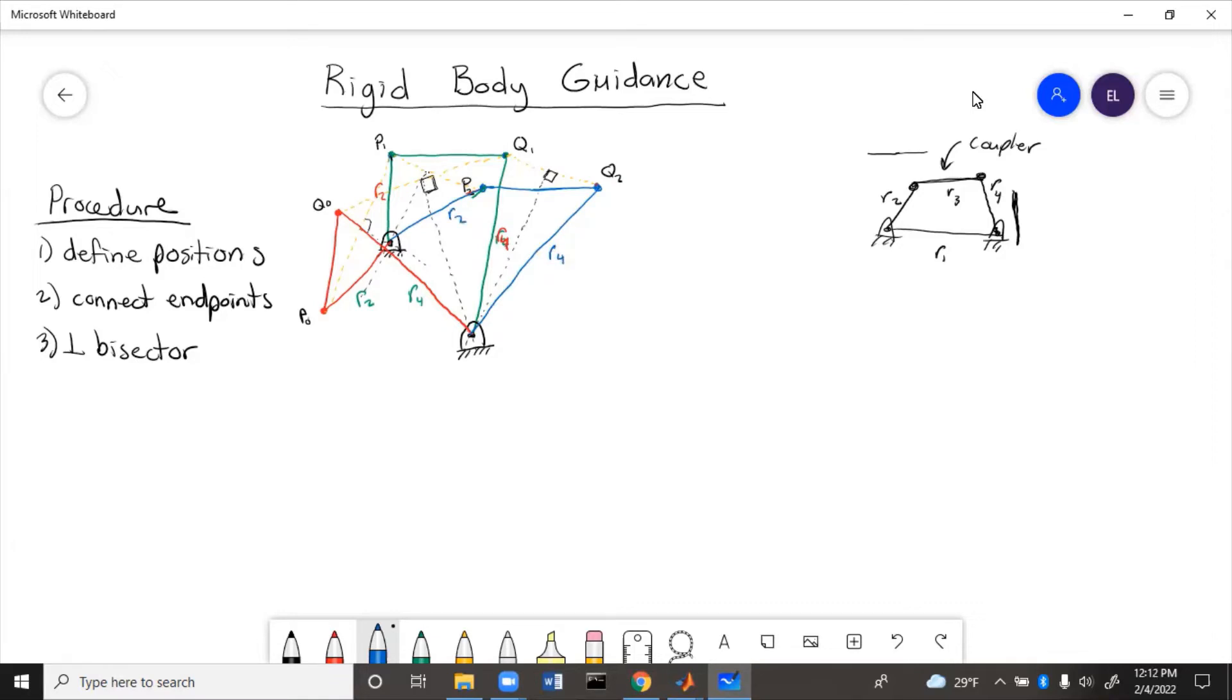So this is how you do rigid body guidance for three positions. Now with a four bar linkage, you cannot do rigid body guidance for more than three positions if the linkage moves in two dimensions. So three positions is the max for two dimensional space. If the ground points could be moved three dimensionally, then you would have some more options.